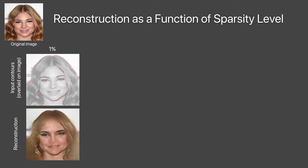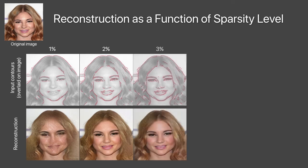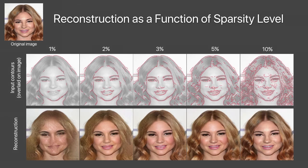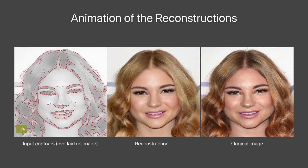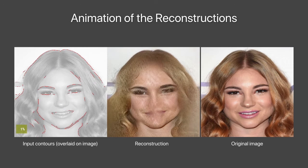Here we show reconstruction as a function of input-contour sparsity levels. Because of the ability to hallucinate high-frequency information, our model can obtain high-quality reconstruction even when the input is very sparse. At 2%, the complete nose is reconstructed with only a few strokes at the bottom. At 5%, many hair details show up even though the contours don't capture them. The quality starts to saturate even with only 7% of contours.